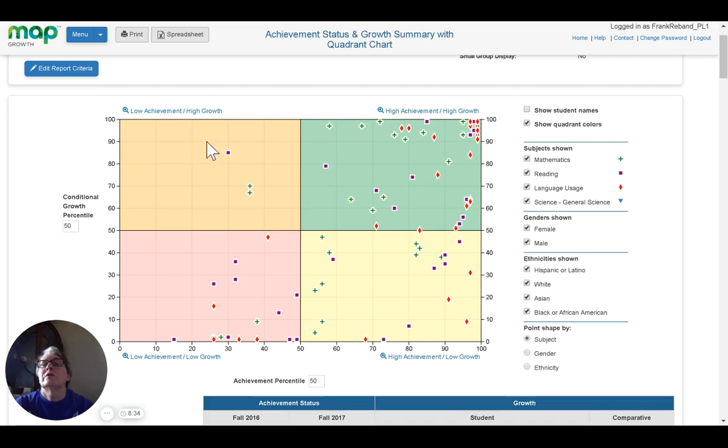The students in this orangish area show low achievement, but they are showing high growth. So there's a positive there. The students in the yellow area toward the bottom show high achievement, but they're not growing very much. So that could be a possible area of concern. Are we meeting their needs?